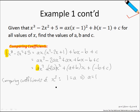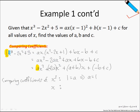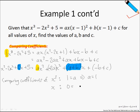Now let us compare the coefficients of x. On the left-hand side of the equation, there is no x term, so the coefficient of x is 0. On the right-hand side, the coefficient of x is a plus b. So 0 equals a plus b, and since a equals 1, solving this gives b equals negative 1.